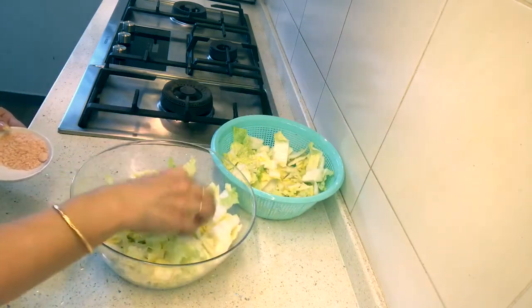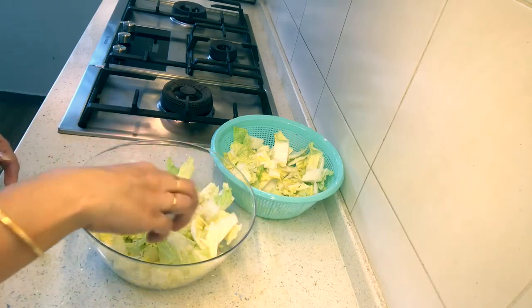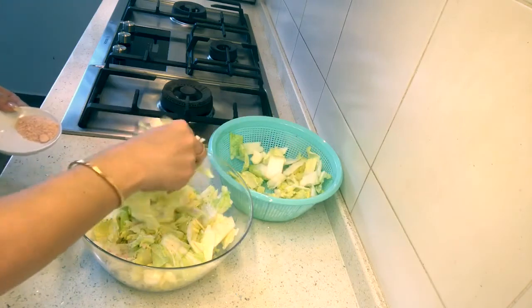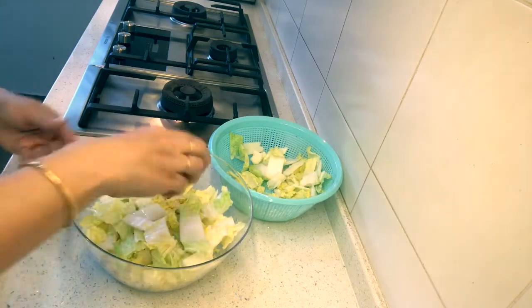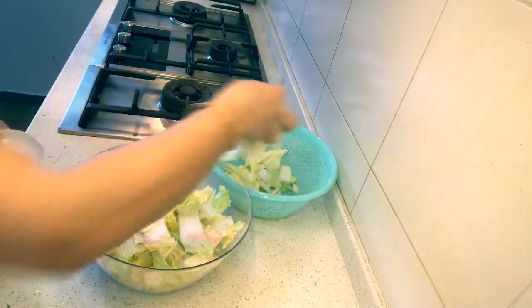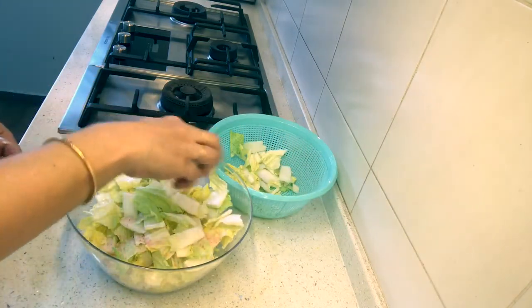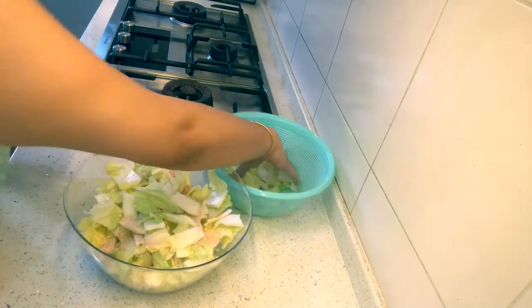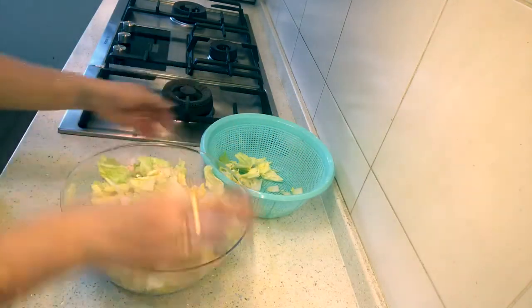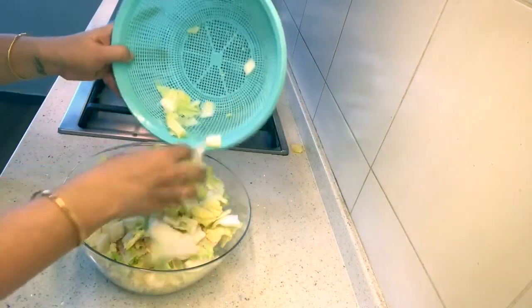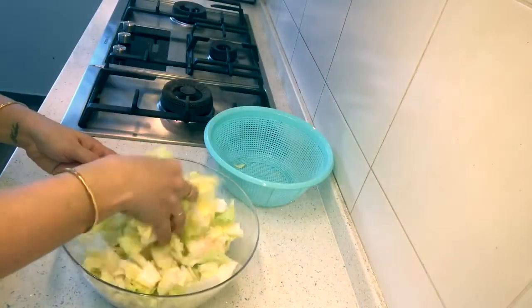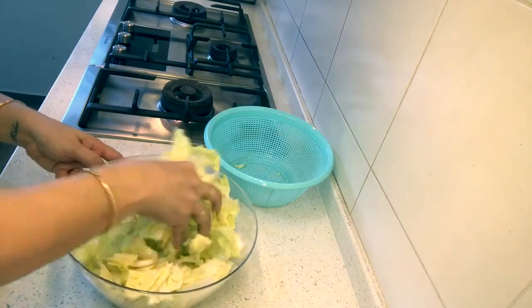In between you can keep on moving the leaves so that all the leaves are coated well. You have to leave it for two hours so that all the water is extracted, then we can start mixing it. This is the only time-consuming process in this whole recipe, otherwise it's quite simple. Make sure all the leaves are coated and let it sit for two hours.